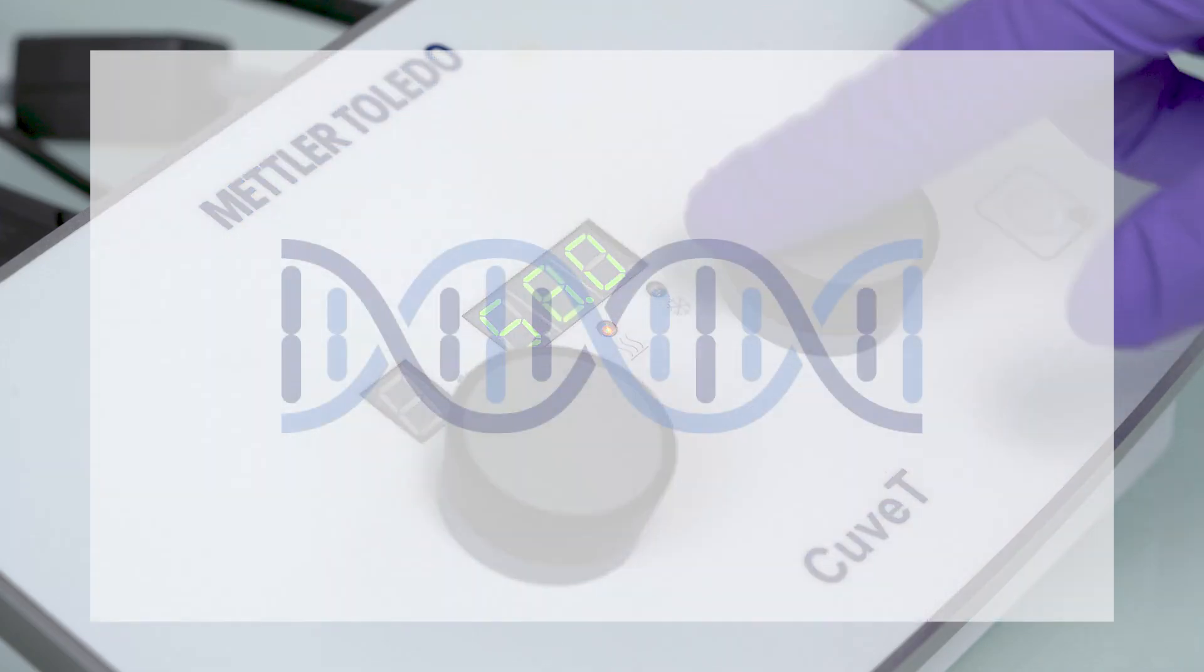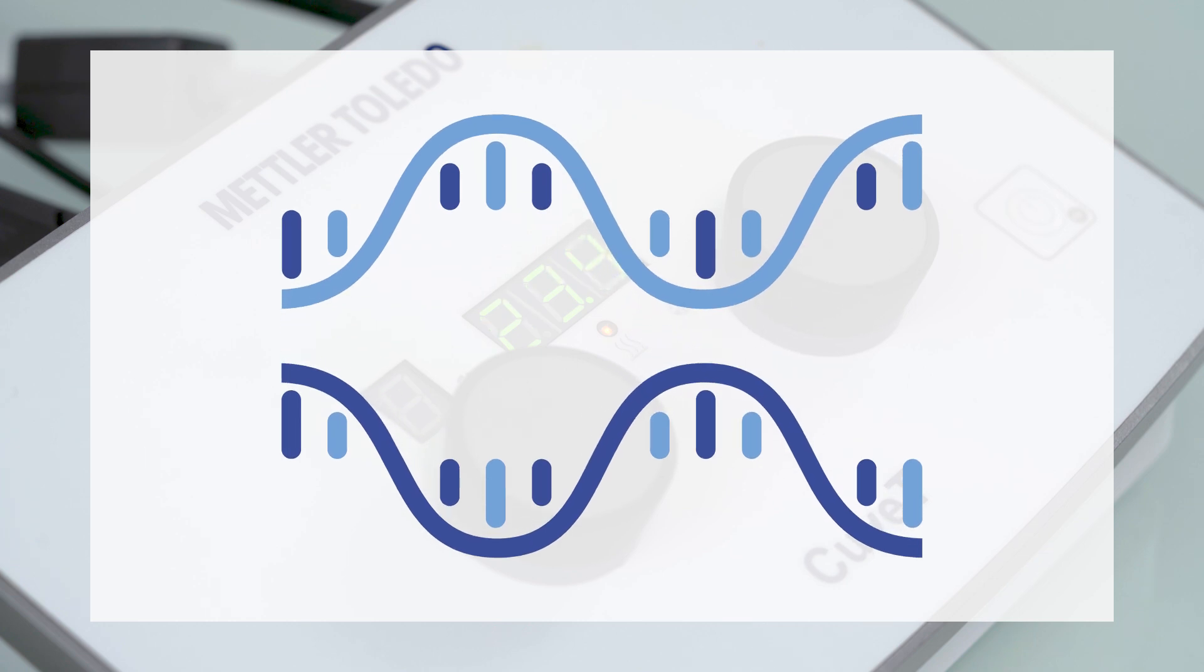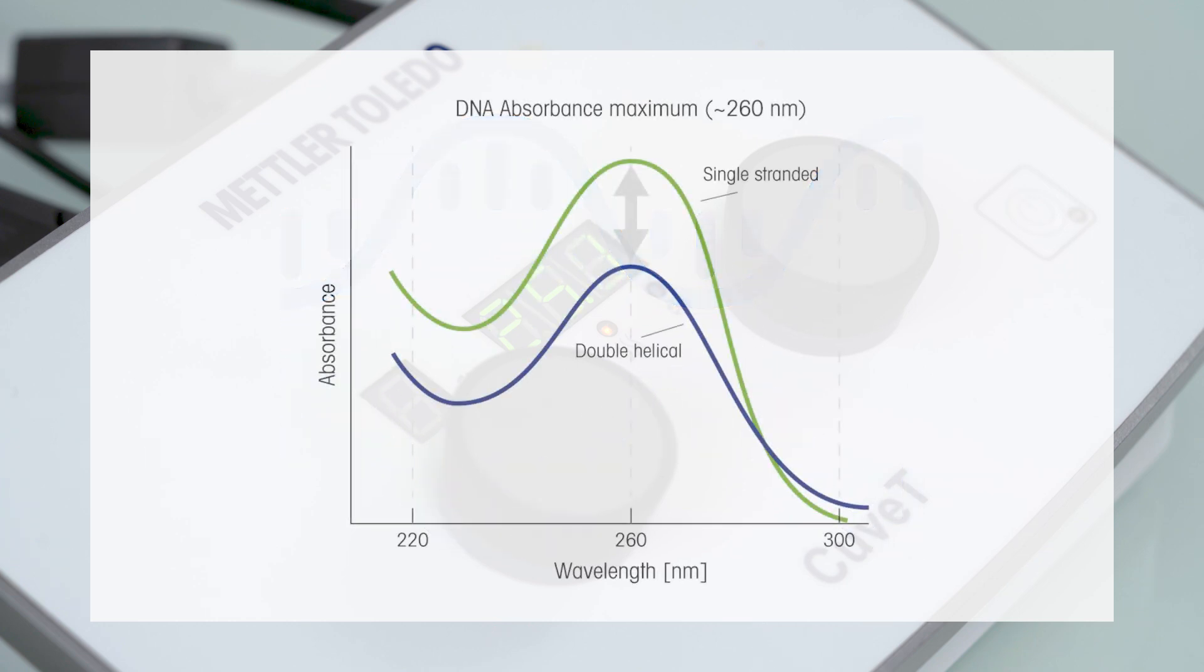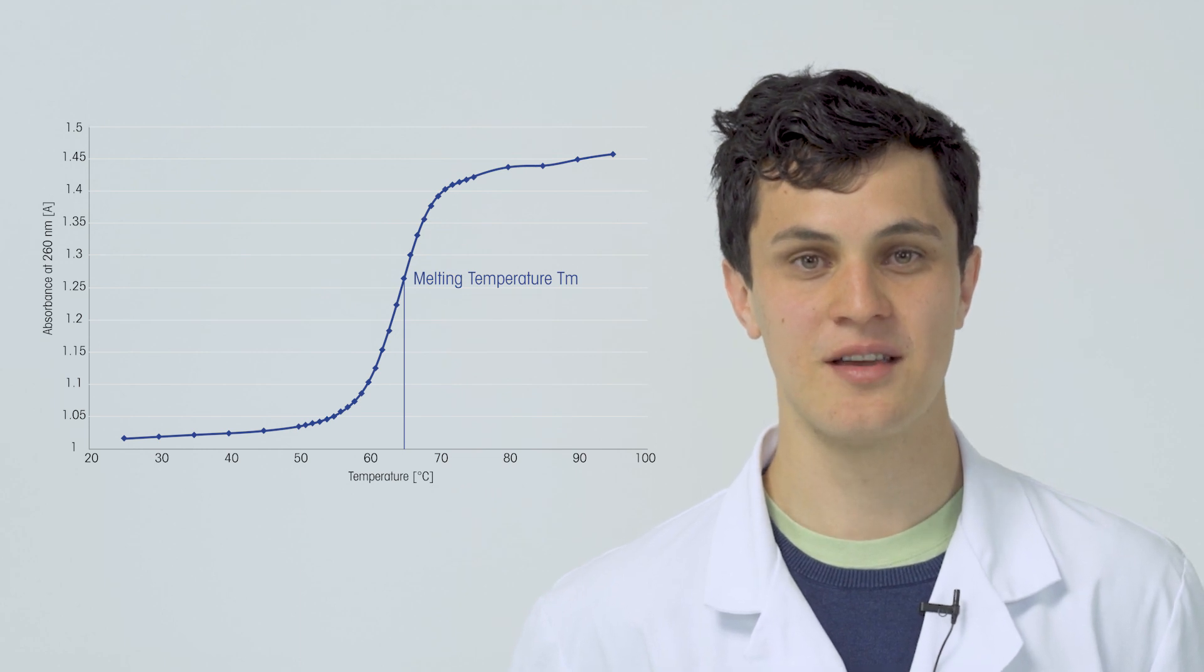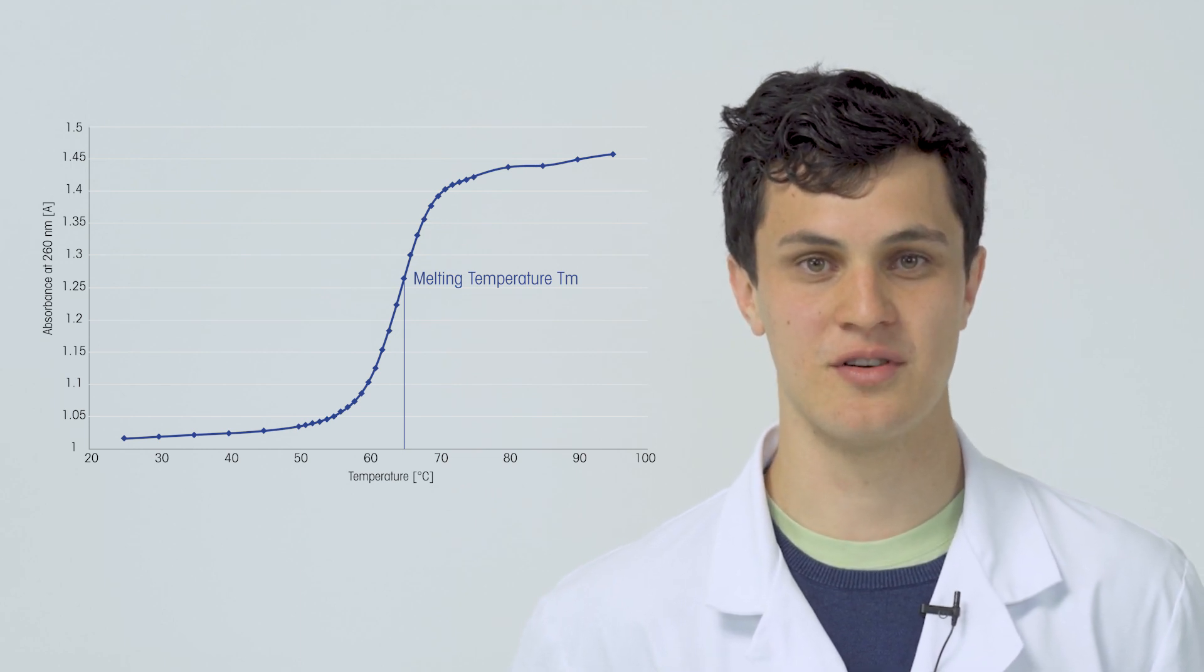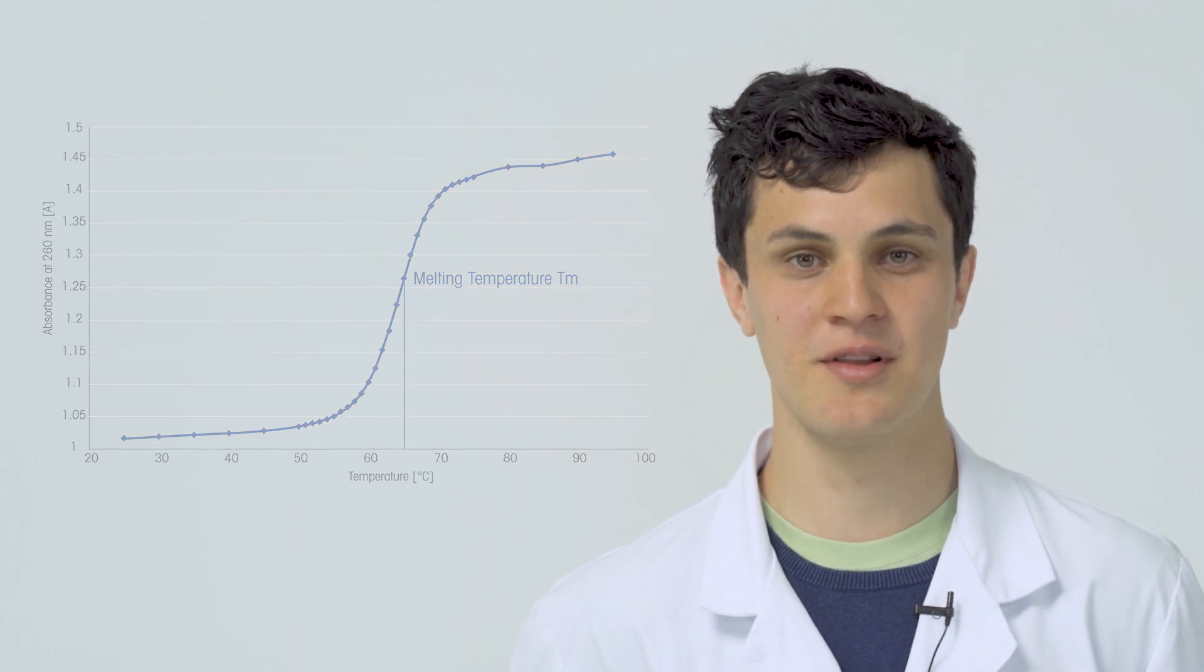By increasing the temperature constantly, double-stranded DNA separates into two single strands, which results in an increase of UV absorbance. The temperature at which half of the DNA is denatured is known as the melting temperature and is a measure for the stability of a DNA double helix. DNA melting can be used to assess the stability of a final product.